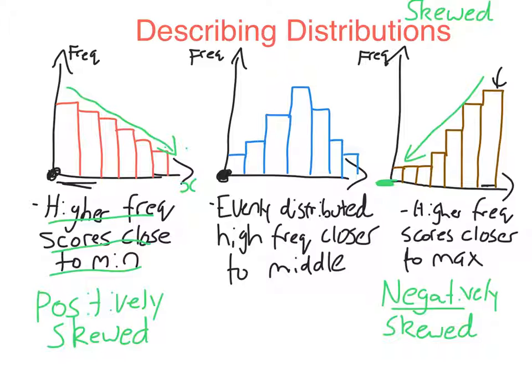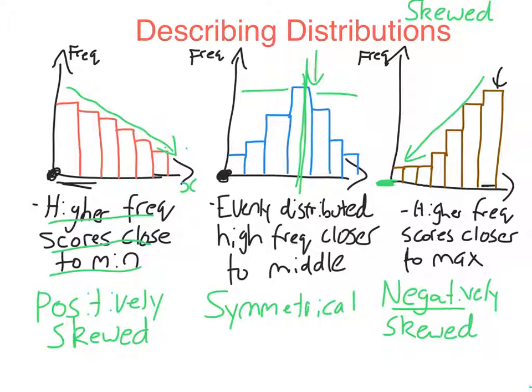positively skewed means scores are clustered towards the minimum. Negatively skewed means scores are clustered towards the maximum. Now, if it's not skewed, if it's not positively skewed and not negatively skewed, it must be this situation in the middle, in which case we say it's not skewed or symmetrical. And that makes sense because there is a lot of symmetry about the histogram here. You can see that if I draw a line through the middle here, this side here is basically a mirror image of that side. There is symmetry there. So that's how we describe distribution in terms of their skewness.